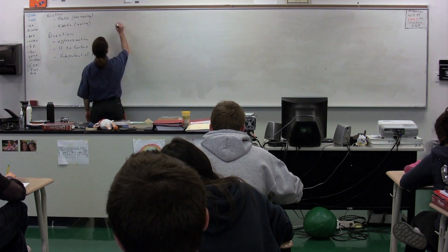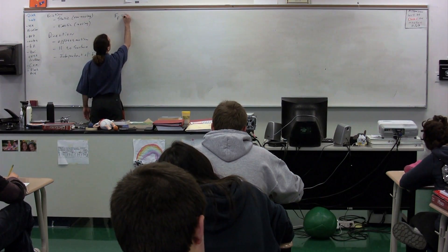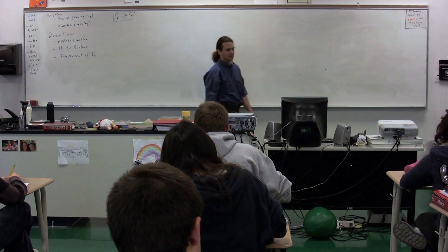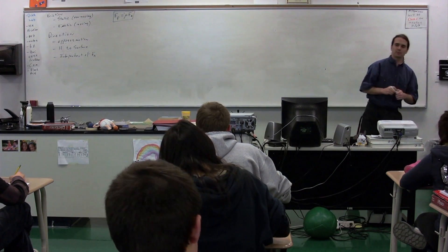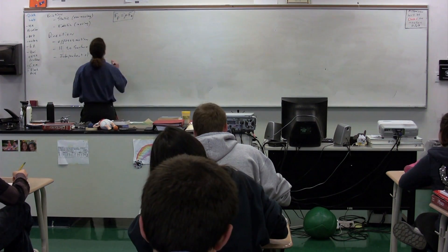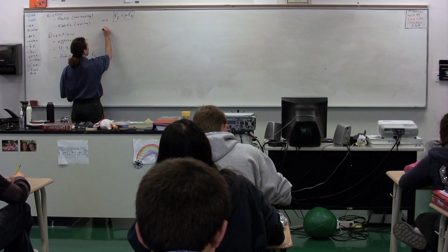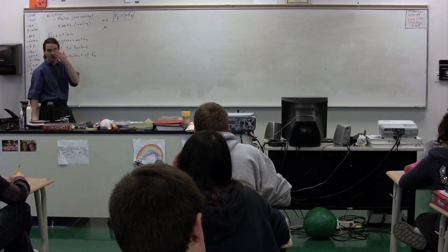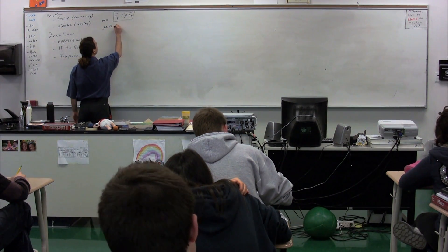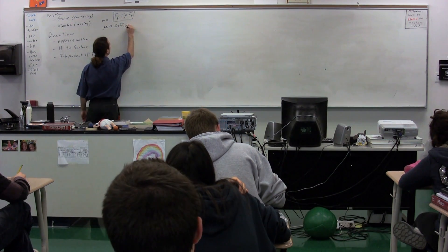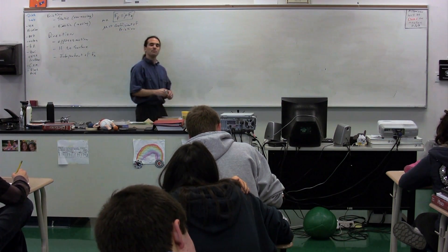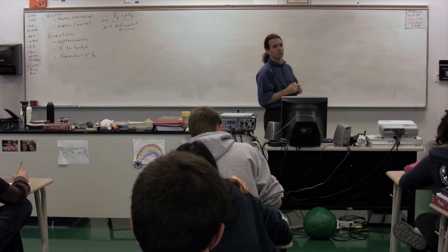Those are the basic things you need to know about friction. We also need the equation. The equation for the force of friction is that it equals mu times force normal. The force of friction equals mu times force normal. Mu is a Greek lowercase letter — a U with a tail at the front — and it stands for the coefficient of friction.